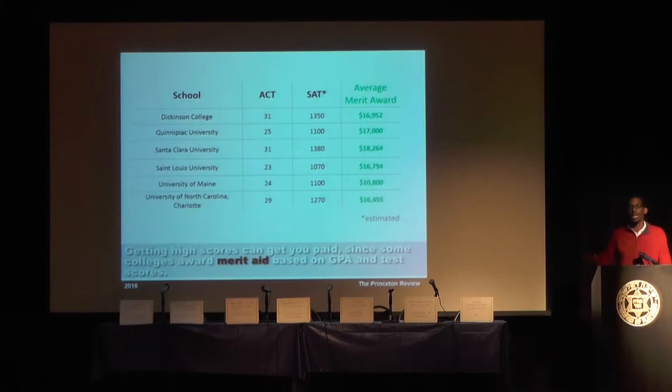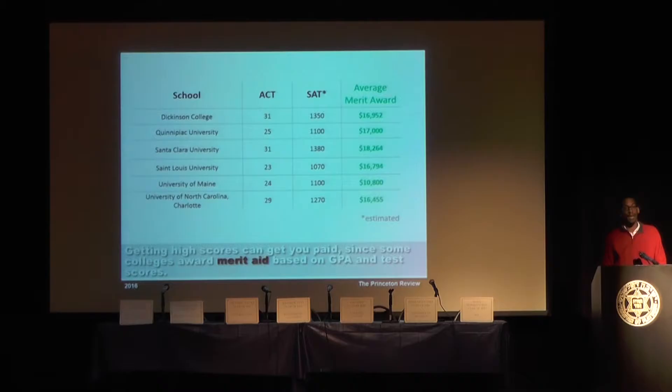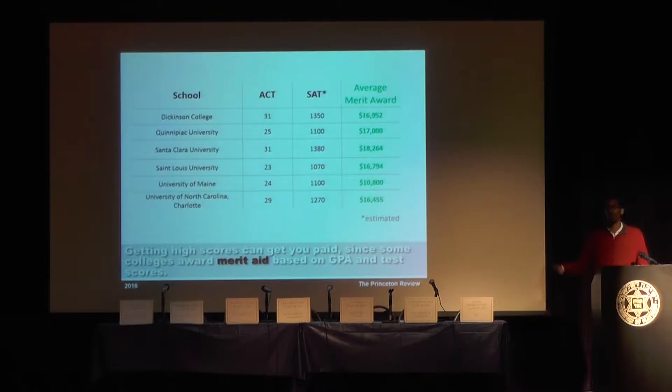Scores also tend to be attached to money — that's why preparing for these tests is worthwhile. Merit scholarships are often tied to GPA and test scores. At University of Maine, for example, a 24 ACT gets you $10,000. That's worth studying for a few weeks if you can get some merit money out of it. Just be aware that test scores often carry a little bit more weight beyond just admissions — some schools tie money to test scores as well.